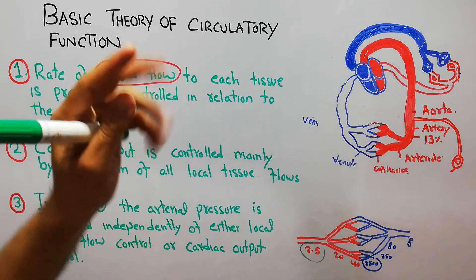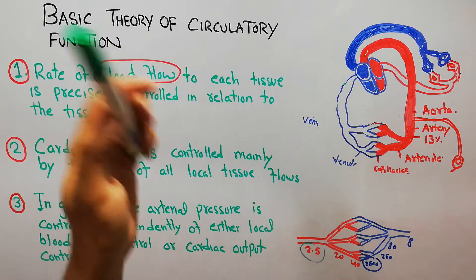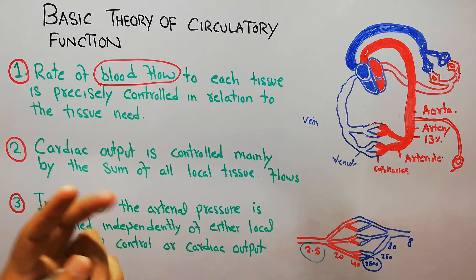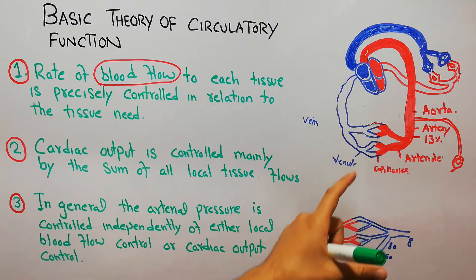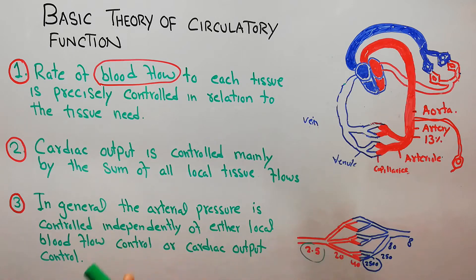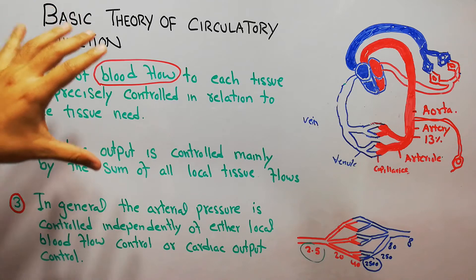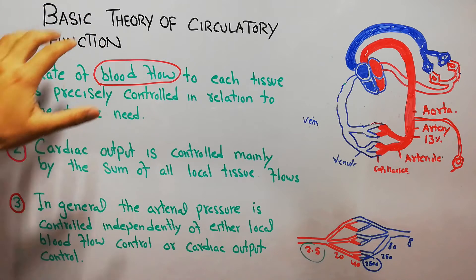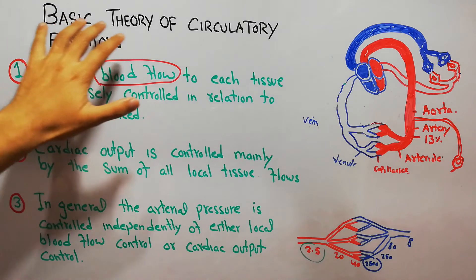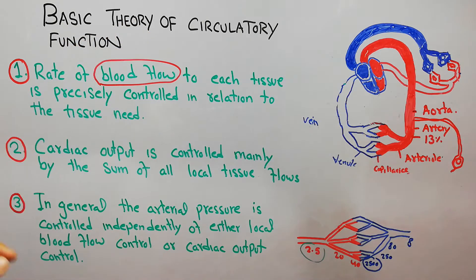We also previously discussed the different components, cross-sectional area, velocity of blood, and pressure in different parts of the circulatory system. Now there are three basic rules known as the basic theory of circulatory function, according to which the circulatory system works.